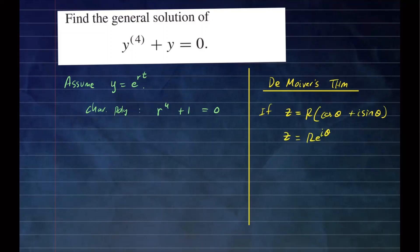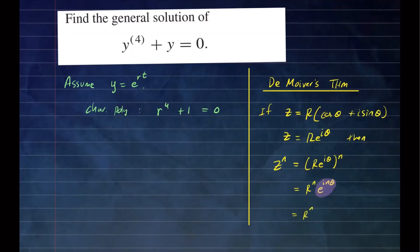So Z is equal to that number in complex form. If Z equals this, we can raise both sides to some nth power. Z to the n would be r e to the iθ to the nth power, which simplifies as r to the n times e to the i·n·θ. Then by using Euler's identity, you can rewrite this as r to the n times cosine of nθ plus i sine of nθ.